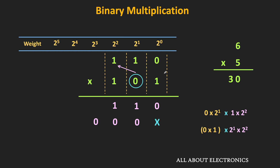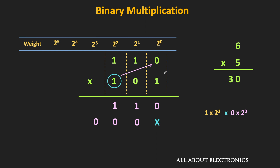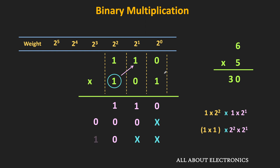Similarly, now let us move to the last digit and multiply it with all the digits of the multiplicand. First, let us multiply this 1 with the 0. This 1×0 = 0. Their weights are 2^2 and 2^0, so their product will be equal to 2 to the power 2. We will place this result in the 2^2 column. Similarly, this 1×1 = 1, and this result will be placed in the 2^3 column. Likewise, this 1×1 = 1, and this product will be placed in the 2^4 column, because the weight of both digits is equal to 2 to the power 2. So in this way, we also got our third partial product.